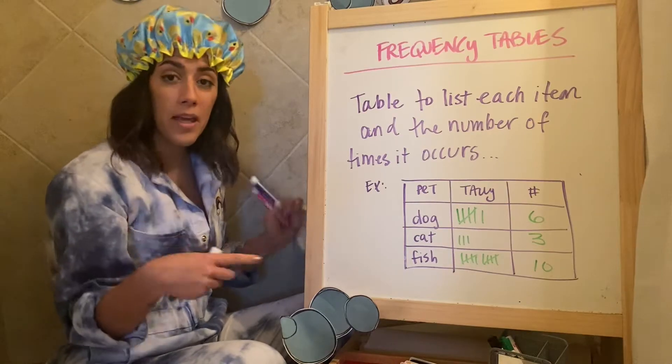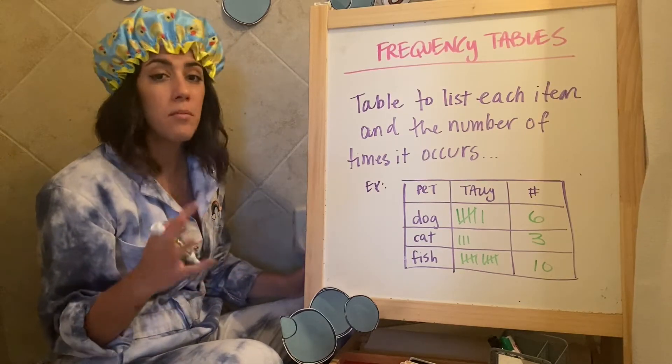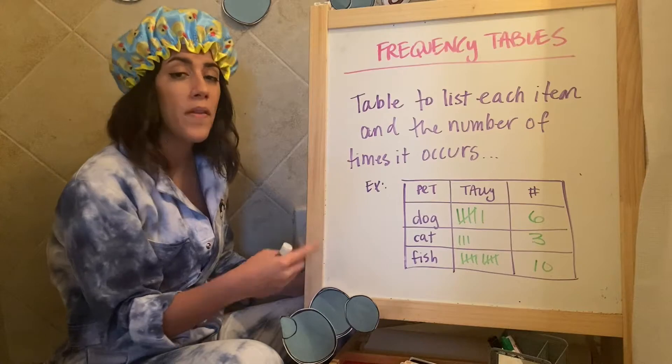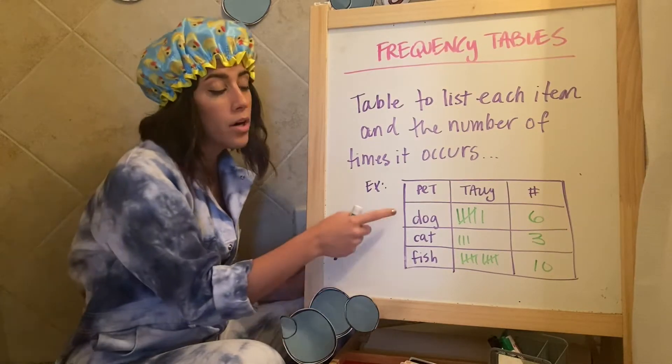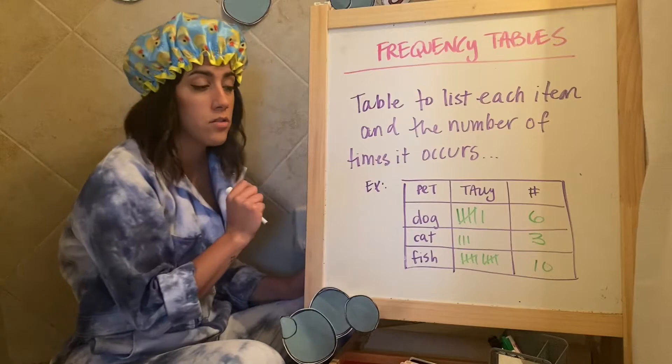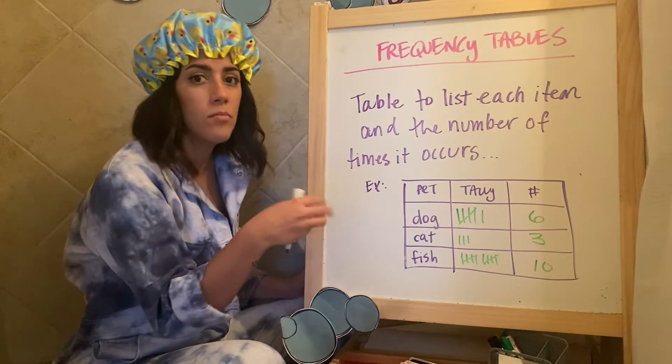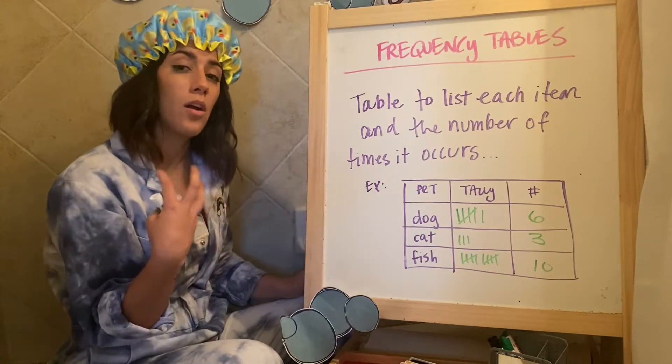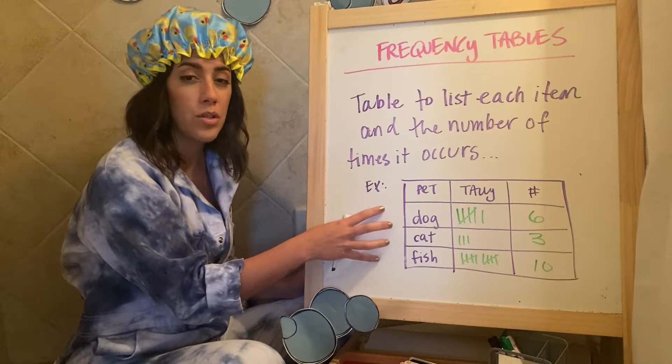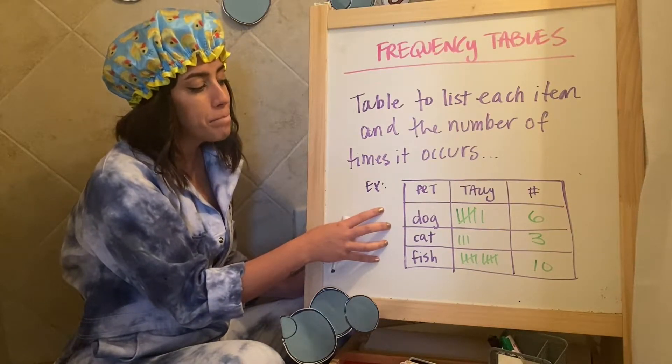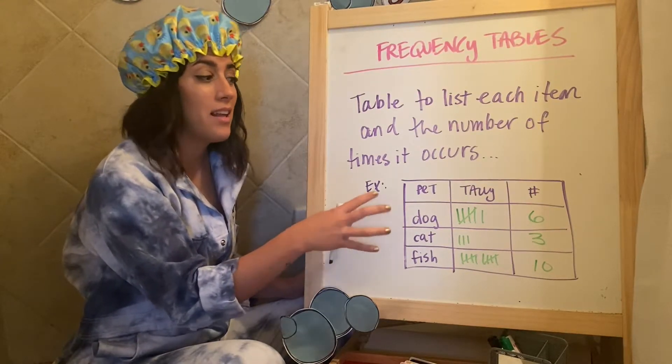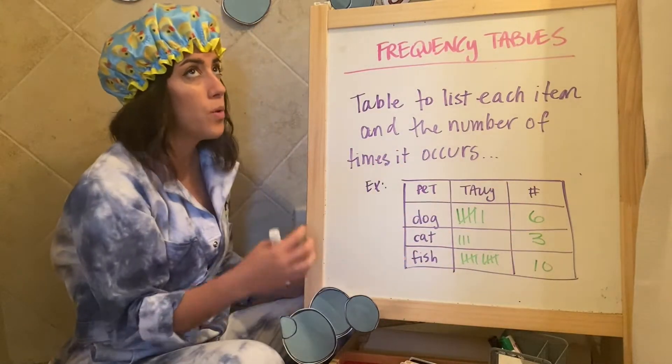Now the complicated part, or not the complicated, but more difficult part is when they ask you questions about it. So how many more fish than dogs, or maybe how many all together, like you're going to get questions based off of a frequency table, and see that you understand the data that's within it.